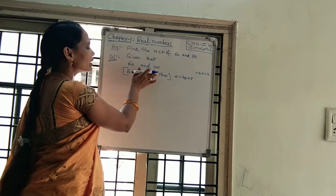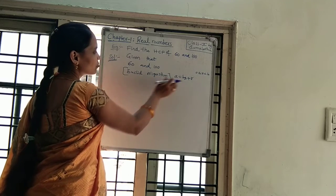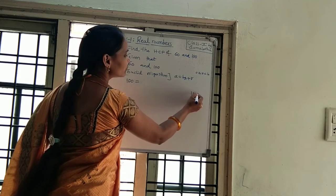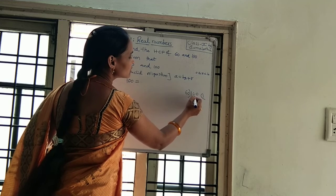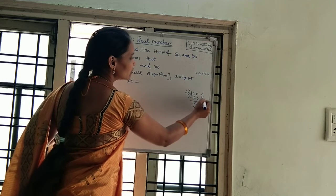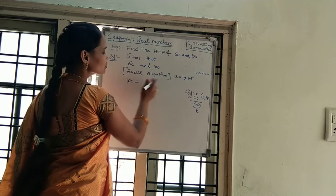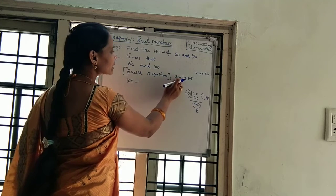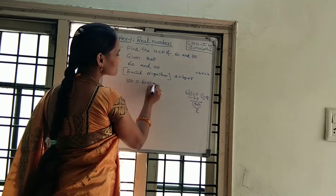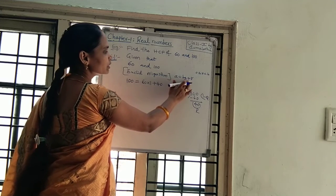Now you have to divide 100 by 60 and write it in the form A = BQ + R. So, 100 = 60 × 1 + 40. Here A is 100, B is the divisor 60, the quotient is 1, and the remainder is 40. This is now written in the form A = BQ + R.